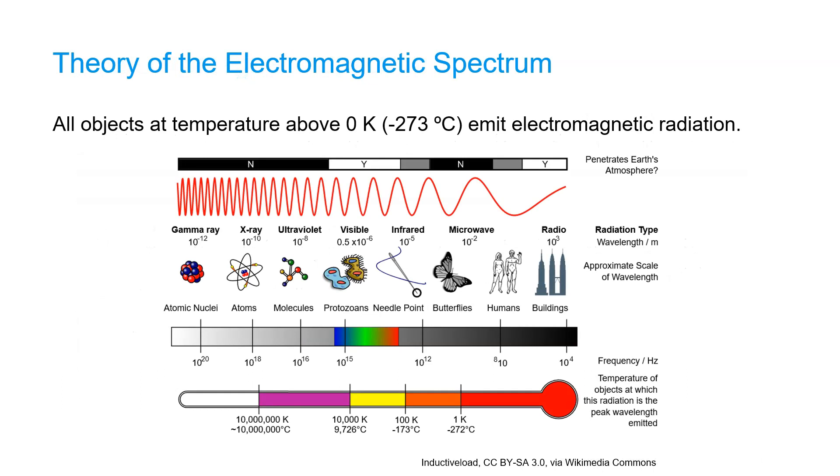All objects at a temperature above the absolute zero which is zero Kelvin or minus 273 degrees Celsius emit electromagnetic radiation as a result of the movement of their atoms and molecules. This picture gives you a bit of an idea of the scale of the wavelengths.